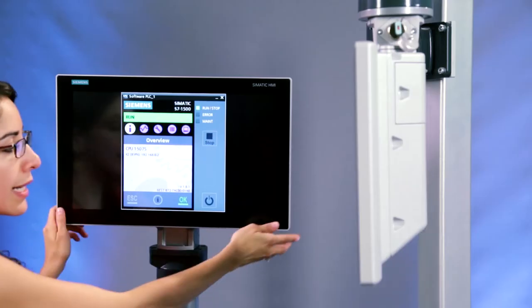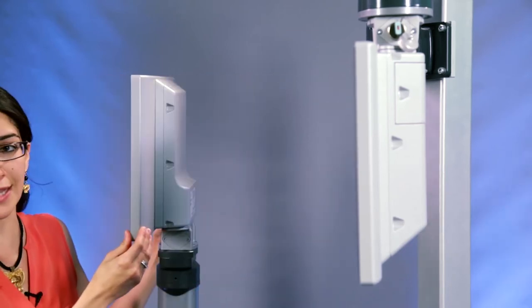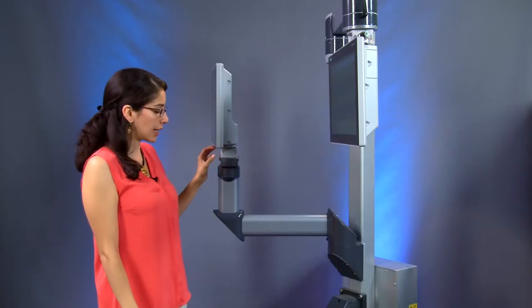But behind the good-looking outside is also a high-performance system inside. On the PRO devices, you can choose between a panel PC or an industrial monitor, which can be installed on supporting feet or on a support arm of various manufacturers by means of a basic adapter.